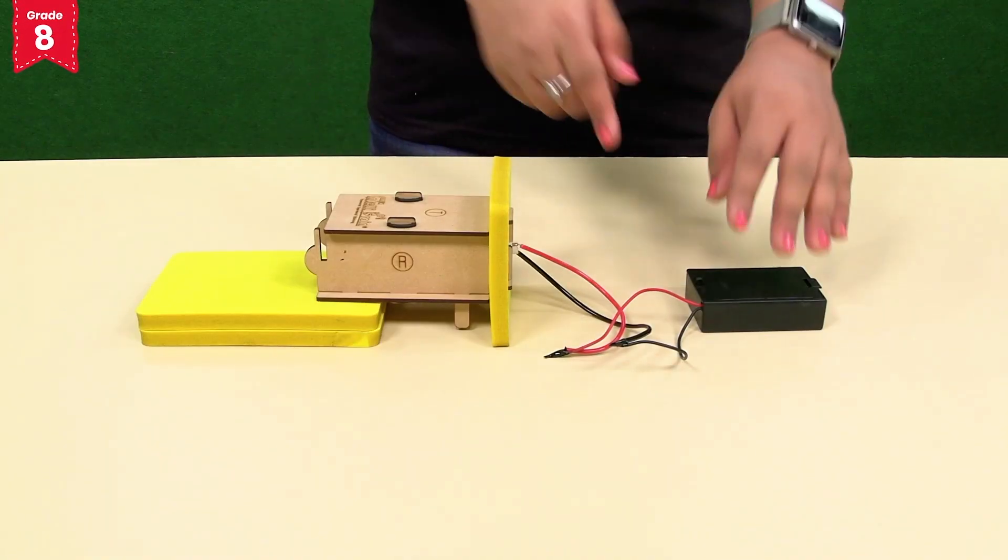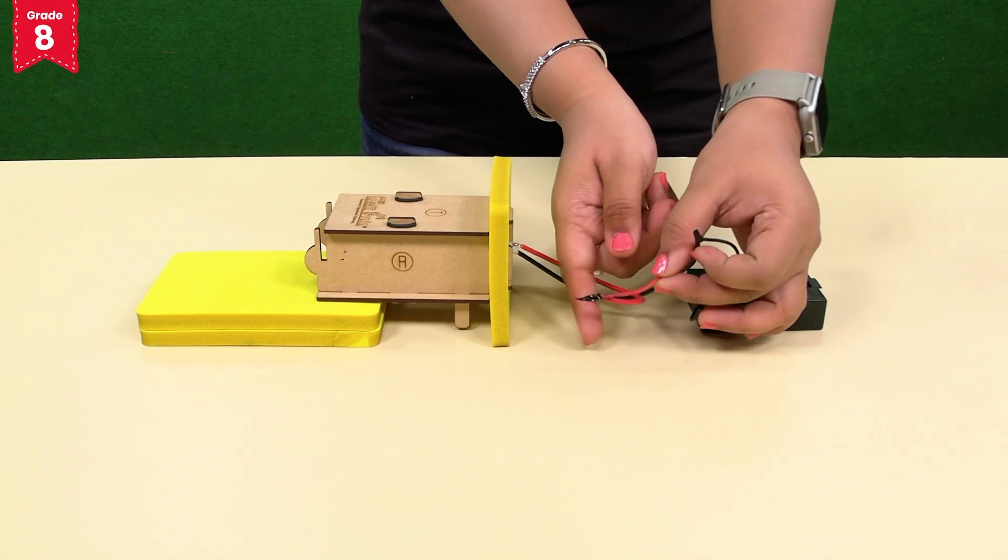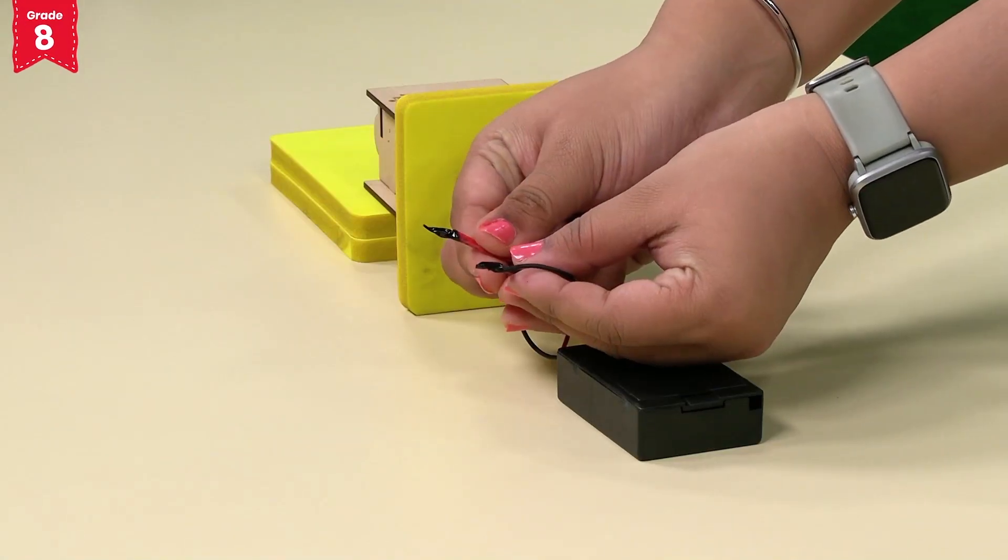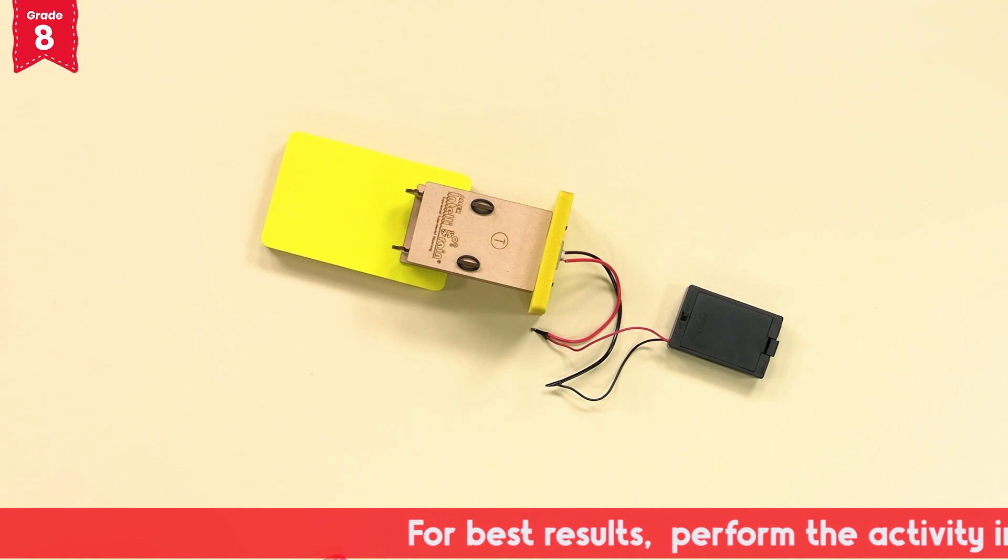After attaching, cover the wire joints with cello tape. Switch on the LED light by turning on the switch on the battery holder.